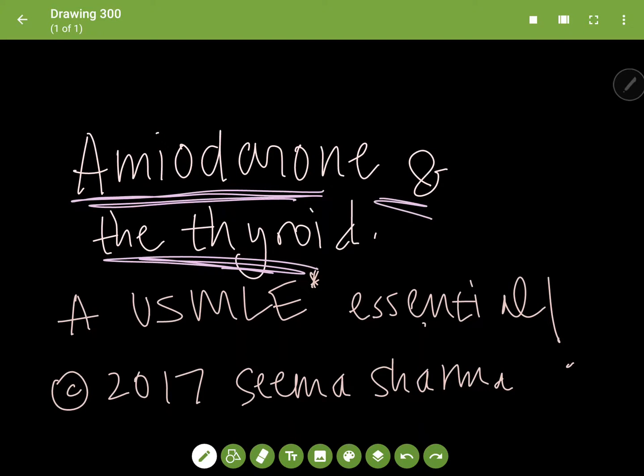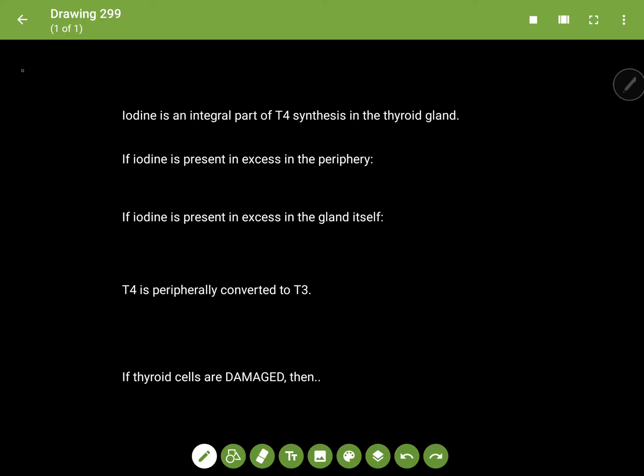Hey guys, welcome to my video on amiodarone and the thyroid. It's an essential for USMLE Step preparation. Amiodarone, as you know, is a drug that is used in atrial fibrillation that has a rapid ventricular rate, so it's used to regulate the rhythm of afib.